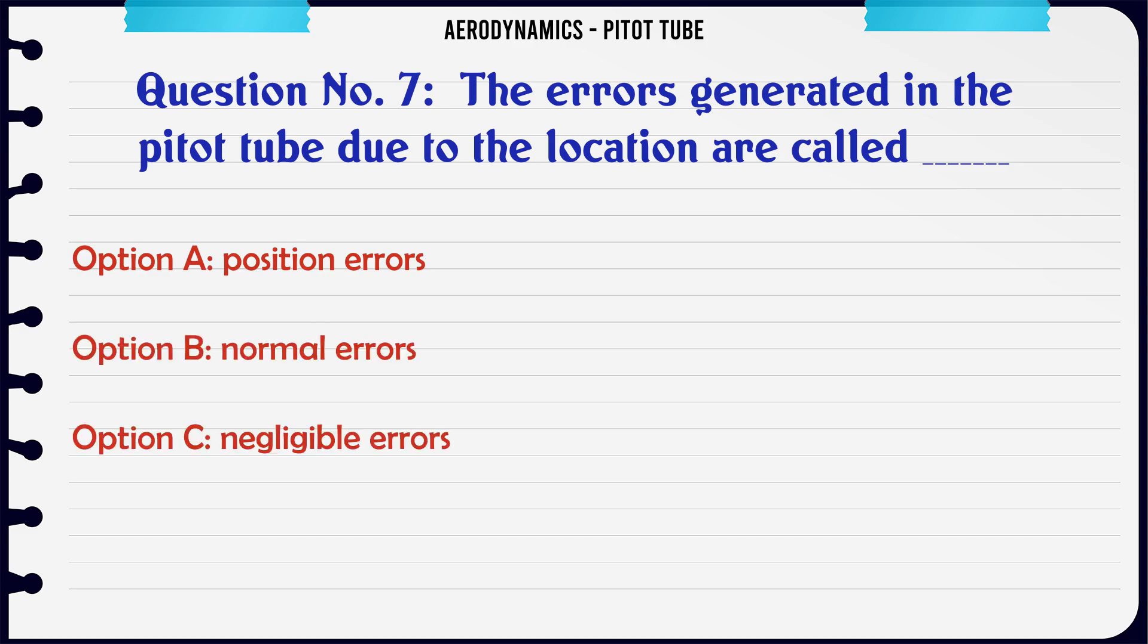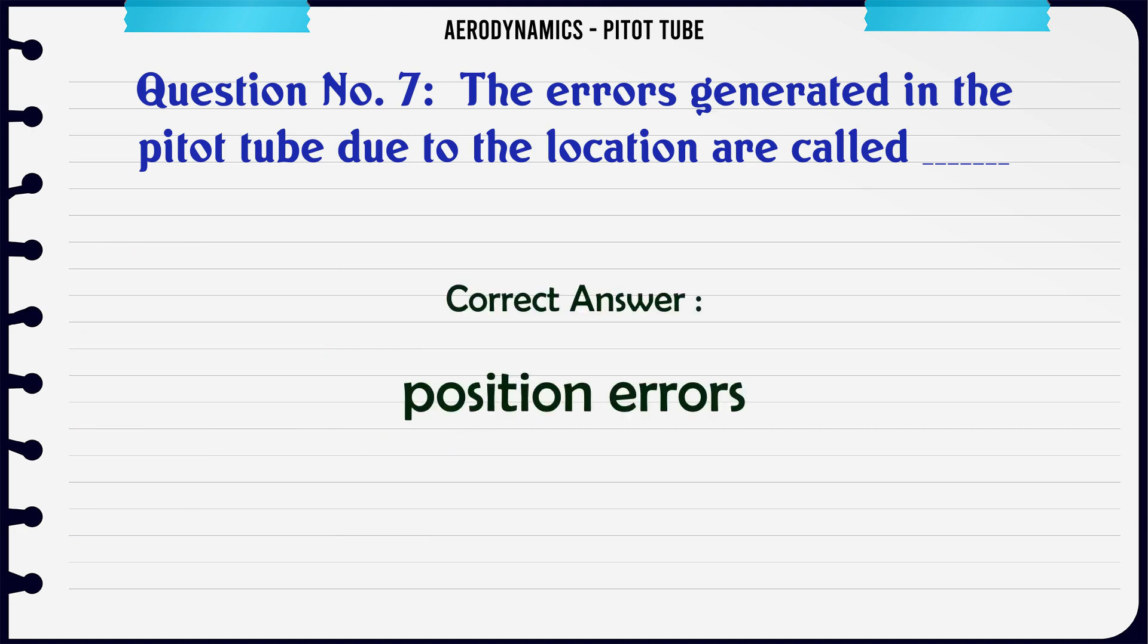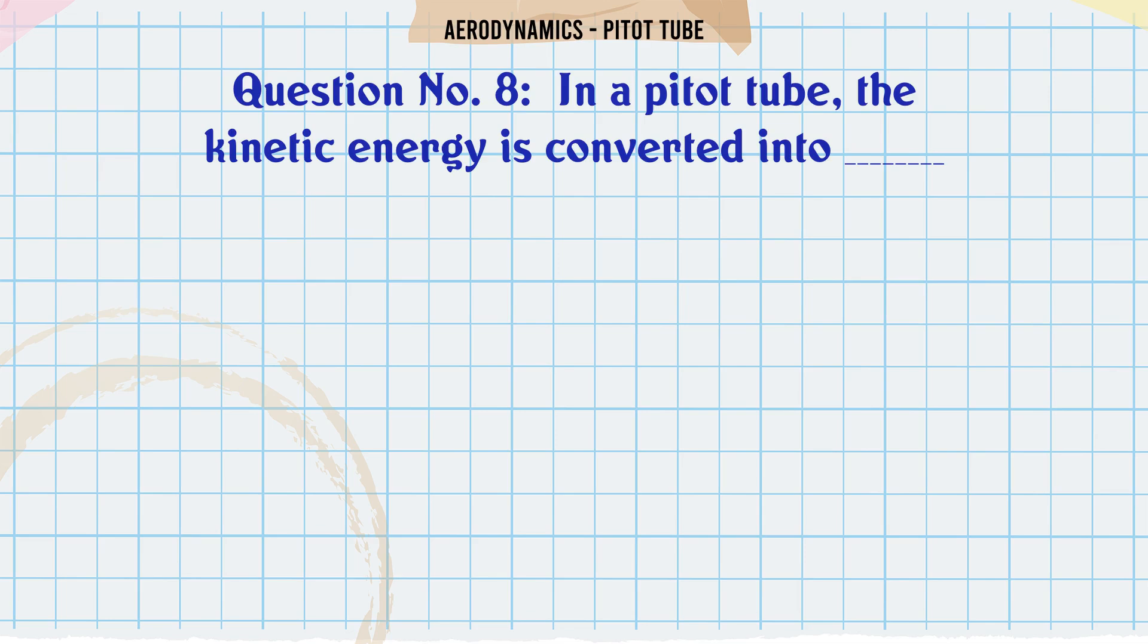The errors generated in the pitot tube due to the location are called: A. Position errors, B. Normal errors, C. Negligible errors, D. Positive errors. The correct answer is Position errors.